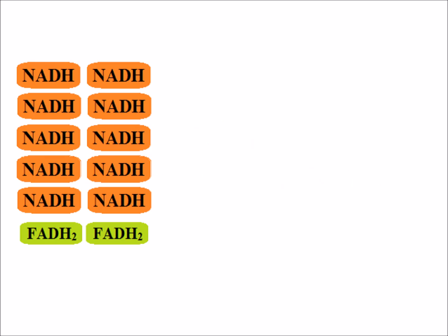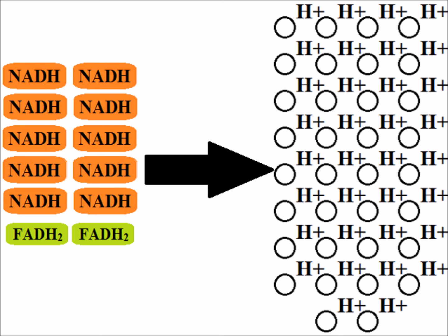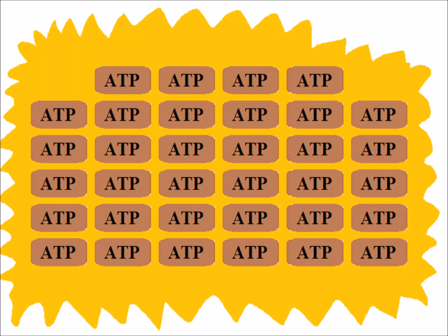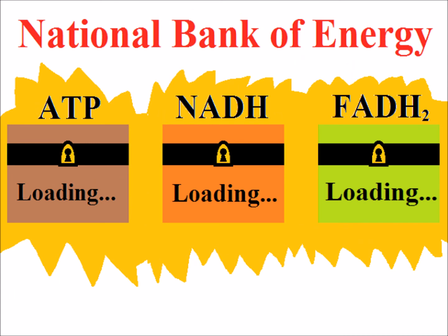So in the end, 10 NADHs and 2 FADH2s move a whopping 34 hydrogen protons. At the rate of one hydrogen proton per ATP molecule, 34 ATPs are made. Let's update the checkbook.